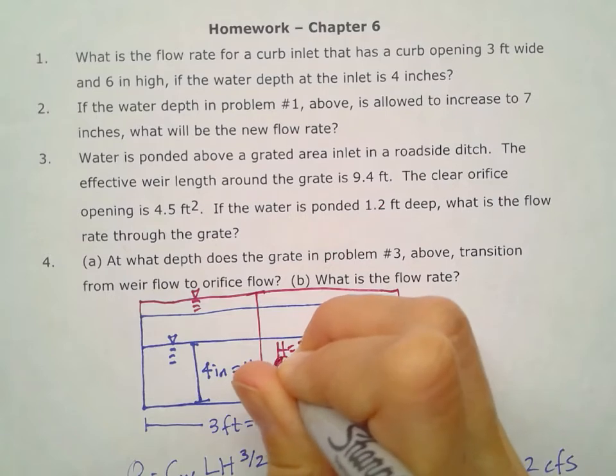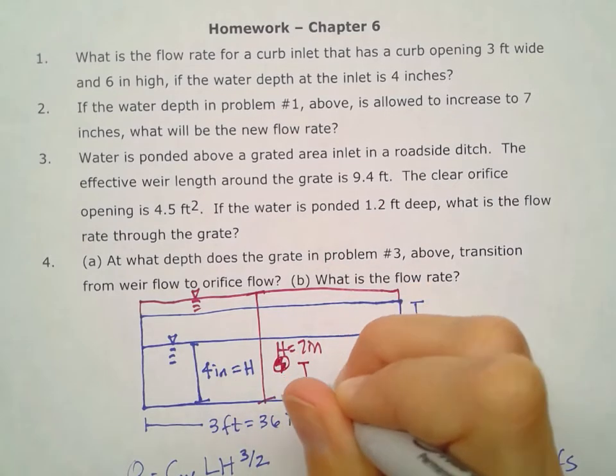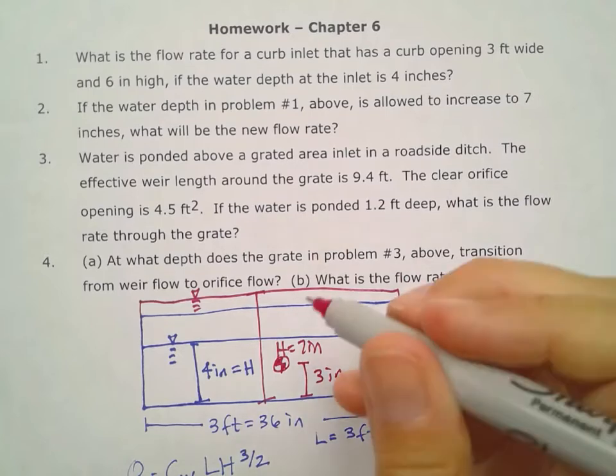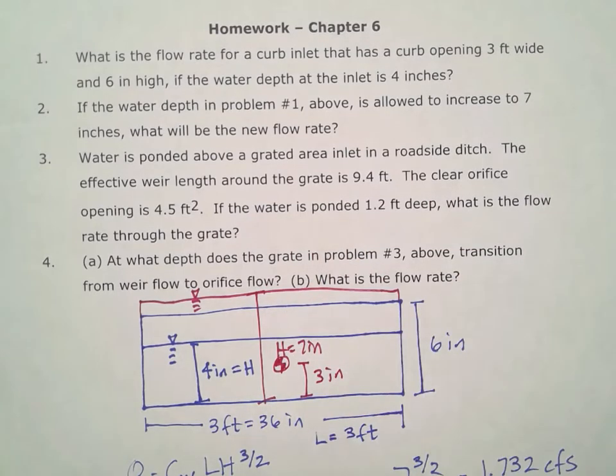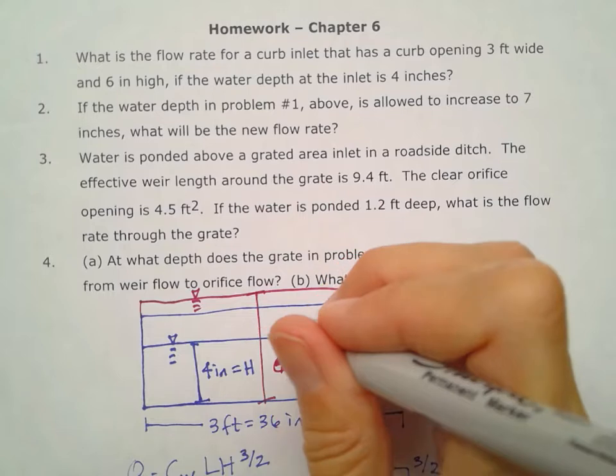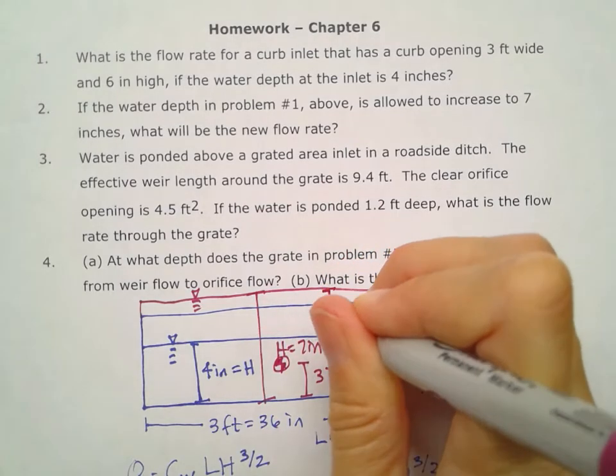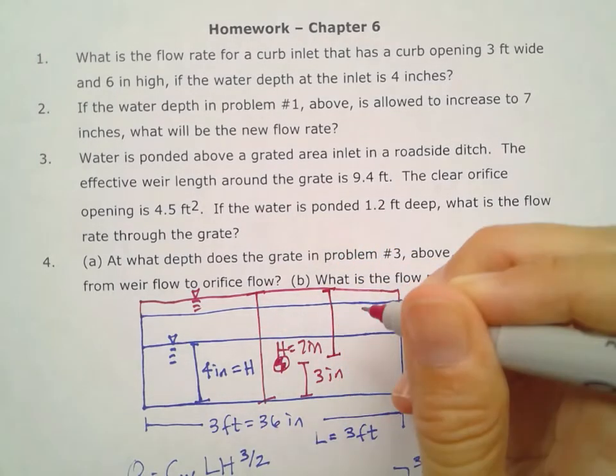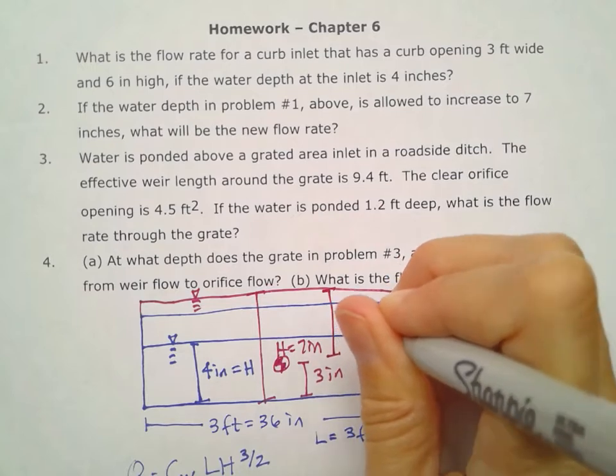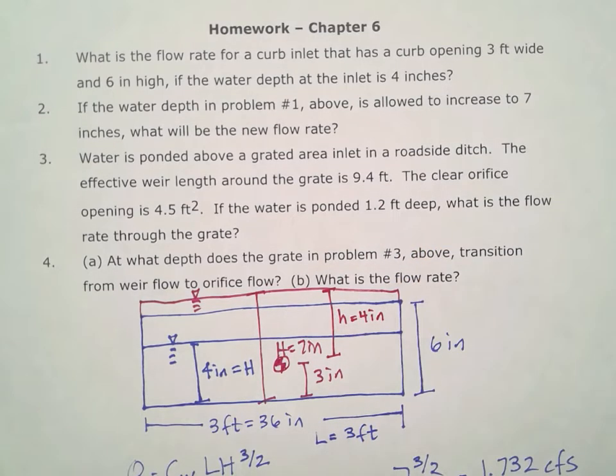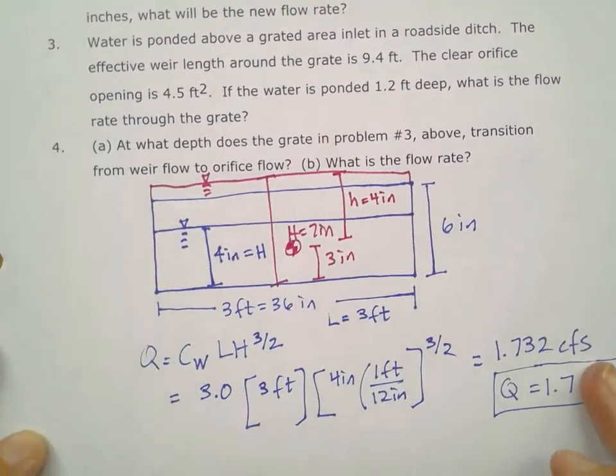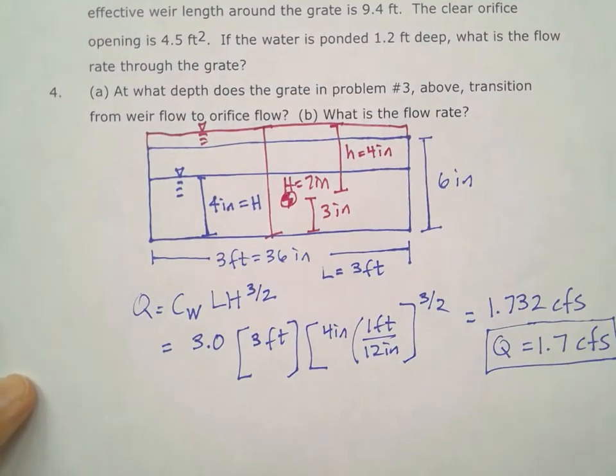But now I am adding this extra inch to the top, so my h is going to be that distance from the centroid to the top of that water level. So my little h is going to be four inches. Remember as a default for that C sub D we're going to use 0.6 for the orifice.